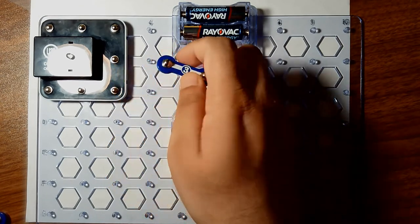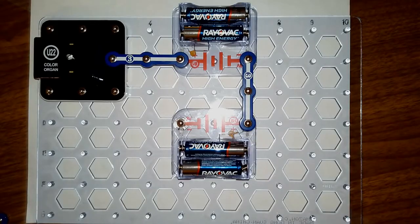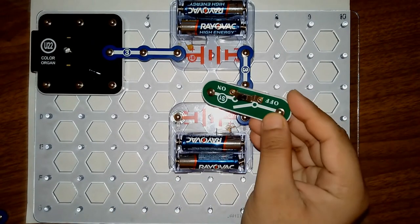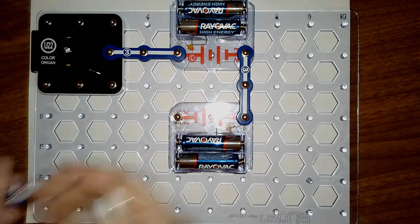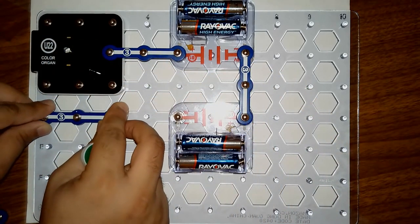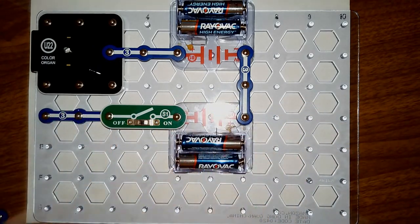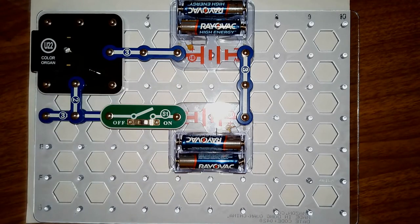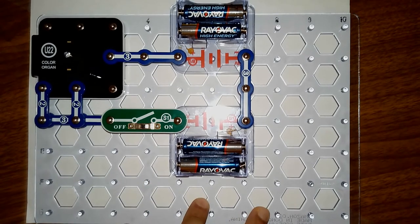All right, and then connect this middle point of this color organ with the three snap wire. Now take this switch and this three snap wire, snap it here and connect this switch to the battery. Connect this point here with the two snap wire. Connect this point here with another two snap wire.